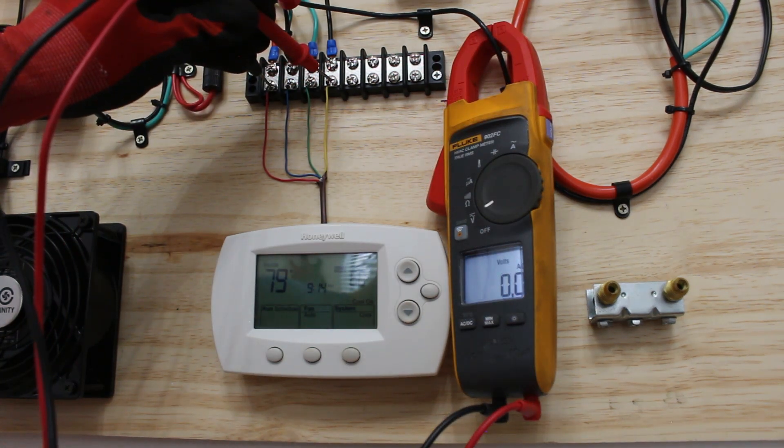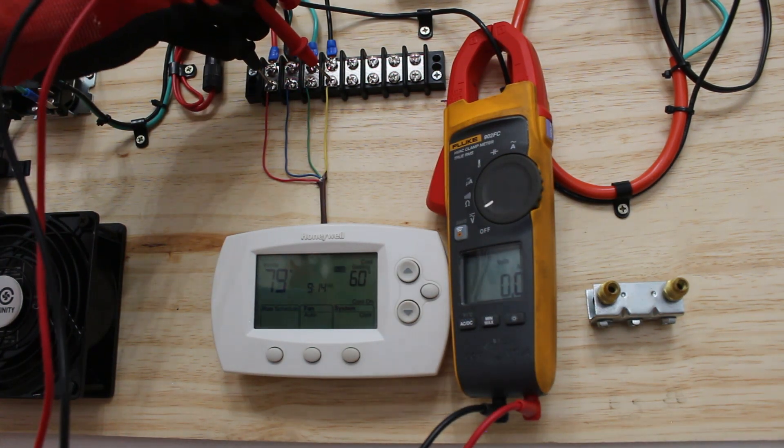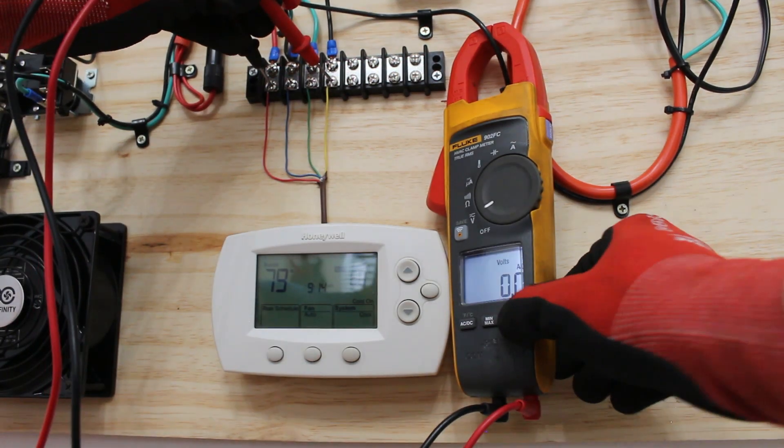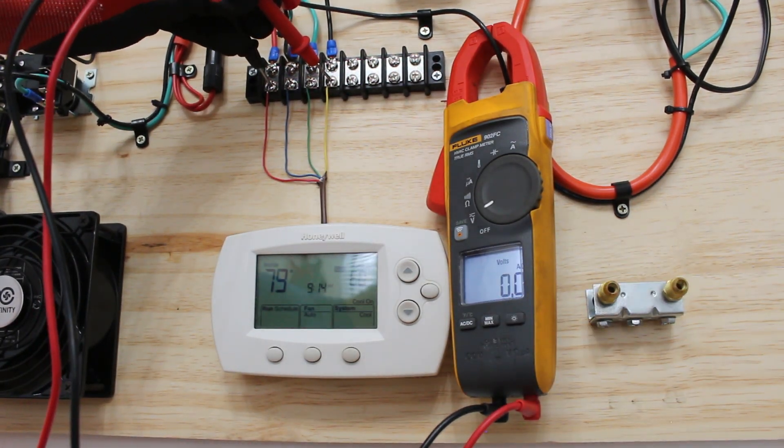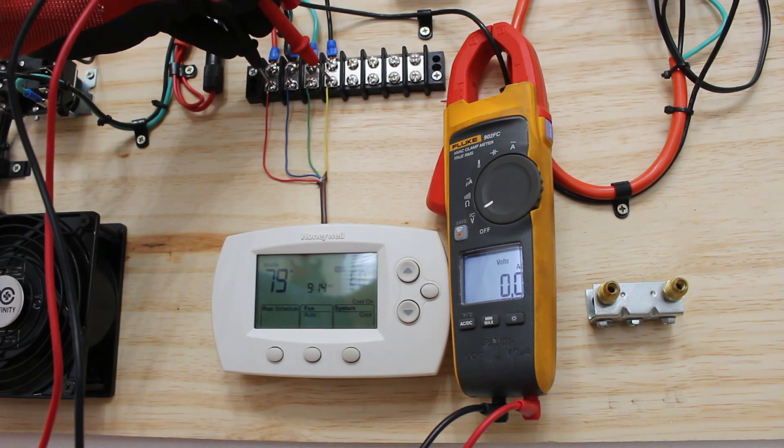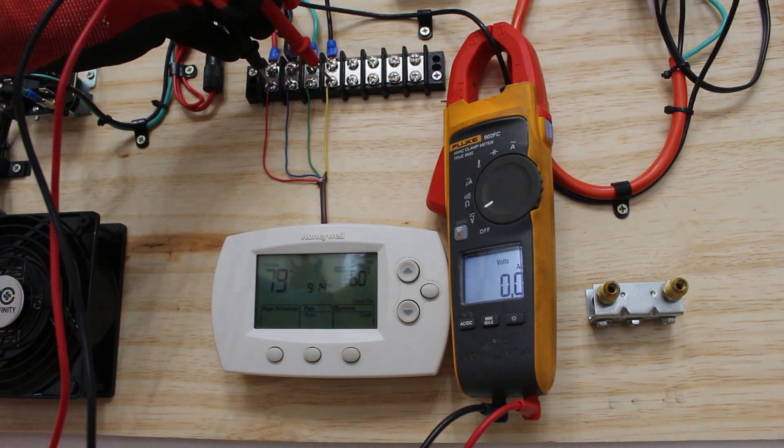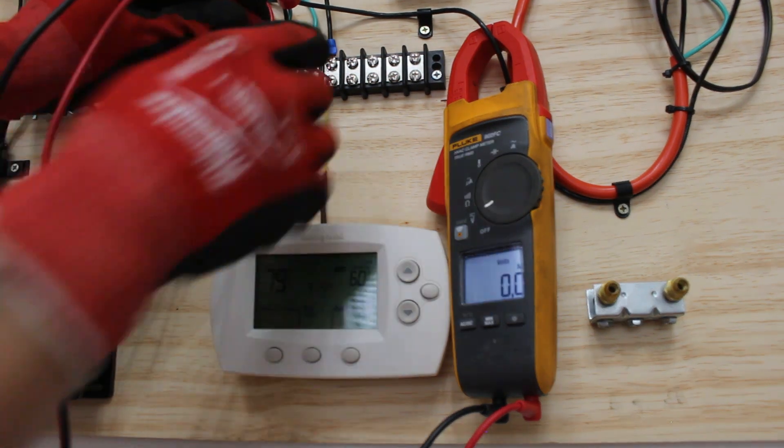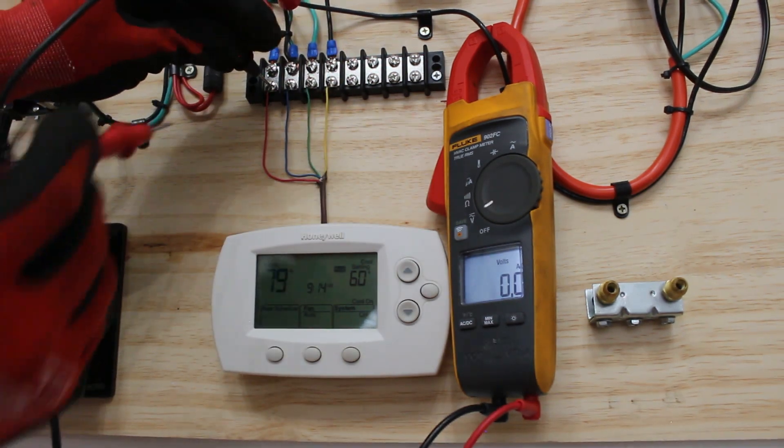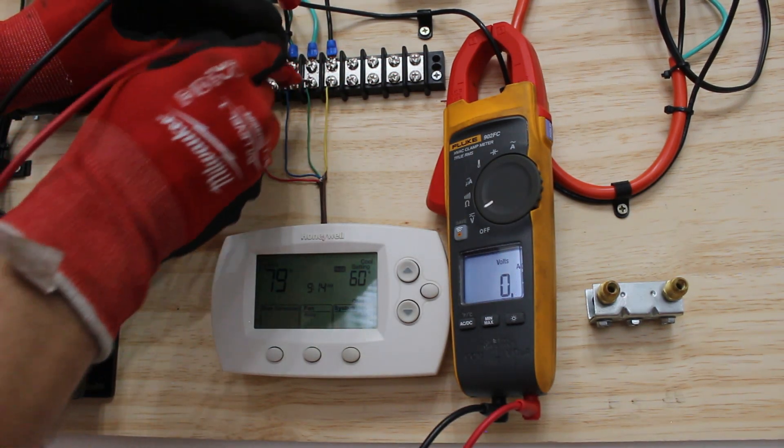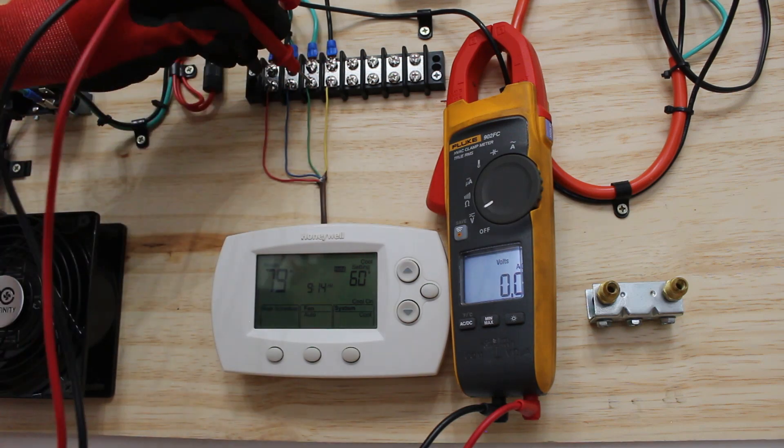As you can hear our indoor fan started. Right now we have our meter across R and Y. You can see we had our voltage drop, now we have zero volts. That means the circuit closed and the thermostat is doing its job. Of course we hear the fan running but that should also have zero volts because now our circuit is closed as well.